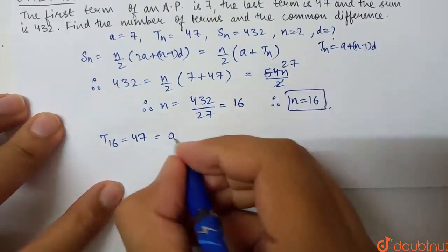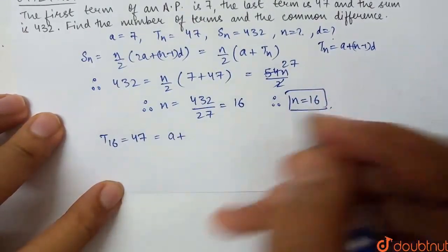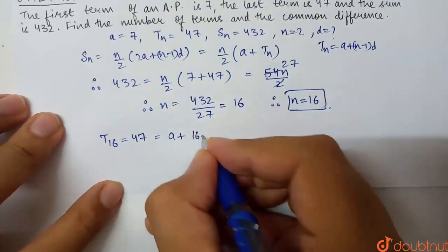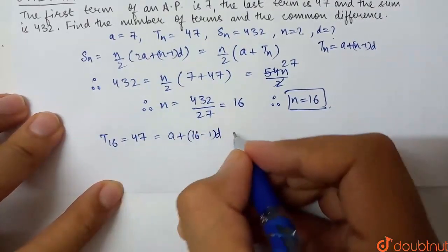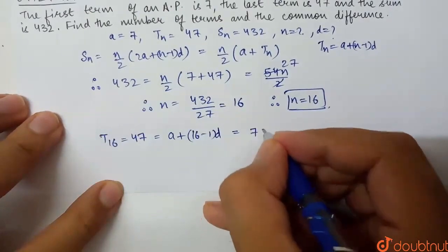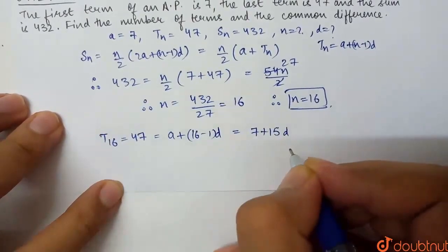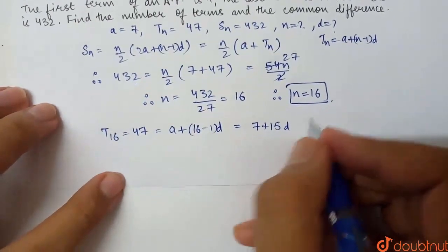I'll calculate it: A plus N minus 1 into D. N is 16, that is 16 minus 1 into common difference. A is 7, so 7 plus 15D.